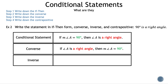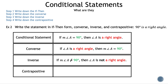Next, let's find the inverse. Remember, the hypothesis and conclusion remain, but we negate them. The inverse statement is: if the measure of angle A is not 90 degrees, then angle A is not a right angle. Next, let's find the contrapositive. Remember, the hypothesis and the conclusion switch, and we negate them. The contrapositive statement is: if angle A is not a right angle, then the measure of angle A does not equal 90 degrees.